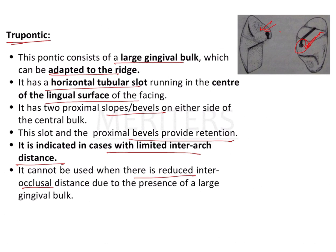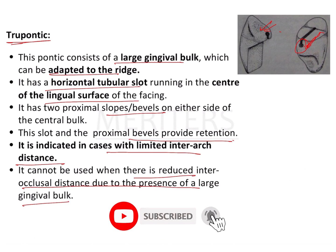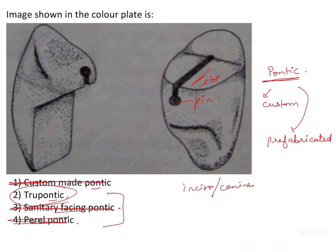The slot and proximal bevels provide retention. True pontic is indicated in cases with limited inter-arch distance, but it cannot be used when there is reduced inter-occlusal distance due to the presence of large gingival bulk. If there is too much soft tissue, this pontic design is contraindicated because it already has significant bulk on its undersurface. Therefore, the image shown is an image of a true pontic.